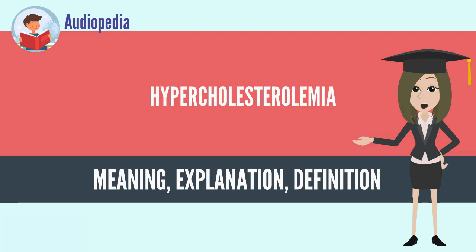Avoiding trans fats and replacing saturated fats in adult diets with polyunsaturated fats are recommended dietary measures to reduce total blood cholesterol and LDL in adults. In people with very high cholesterol, e.g., familial hypercholesterolemia, diet is often not sufficient to achieve the desired lowering of LDL, and lipid-lowering medications are usually required.